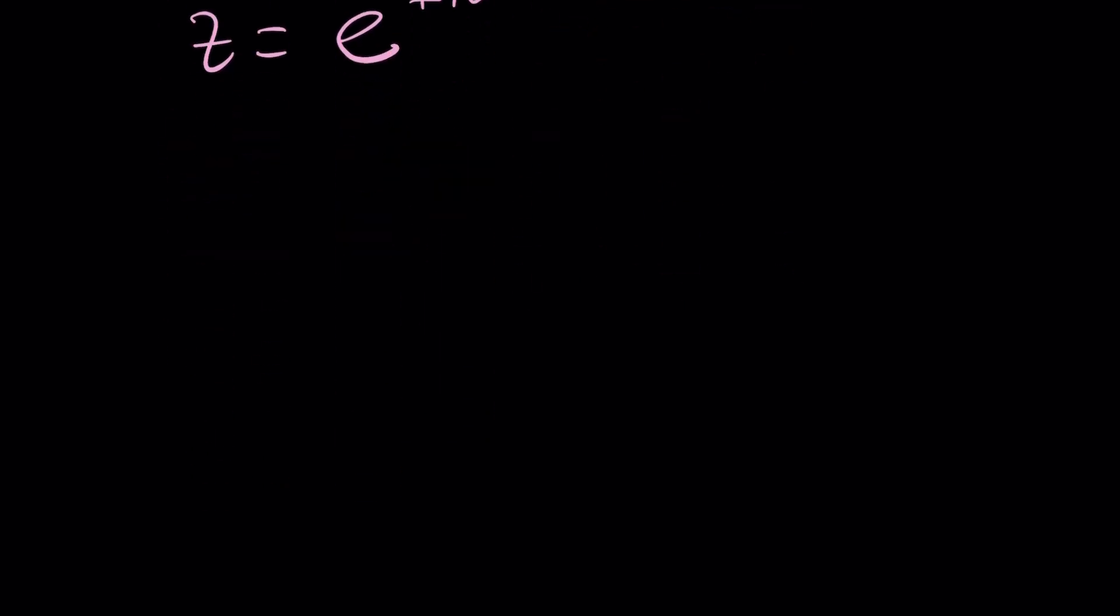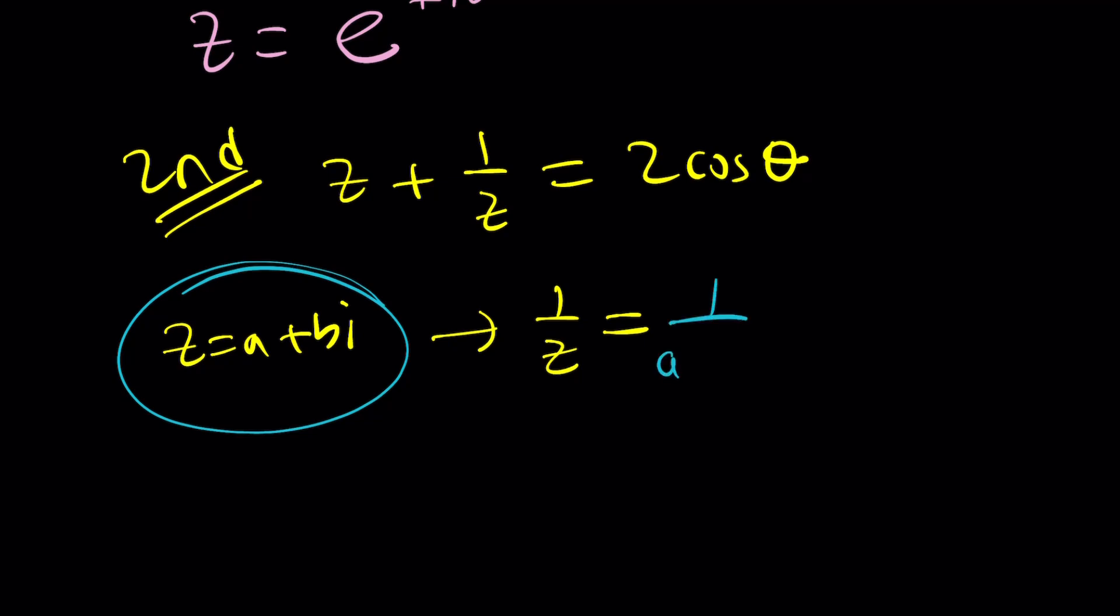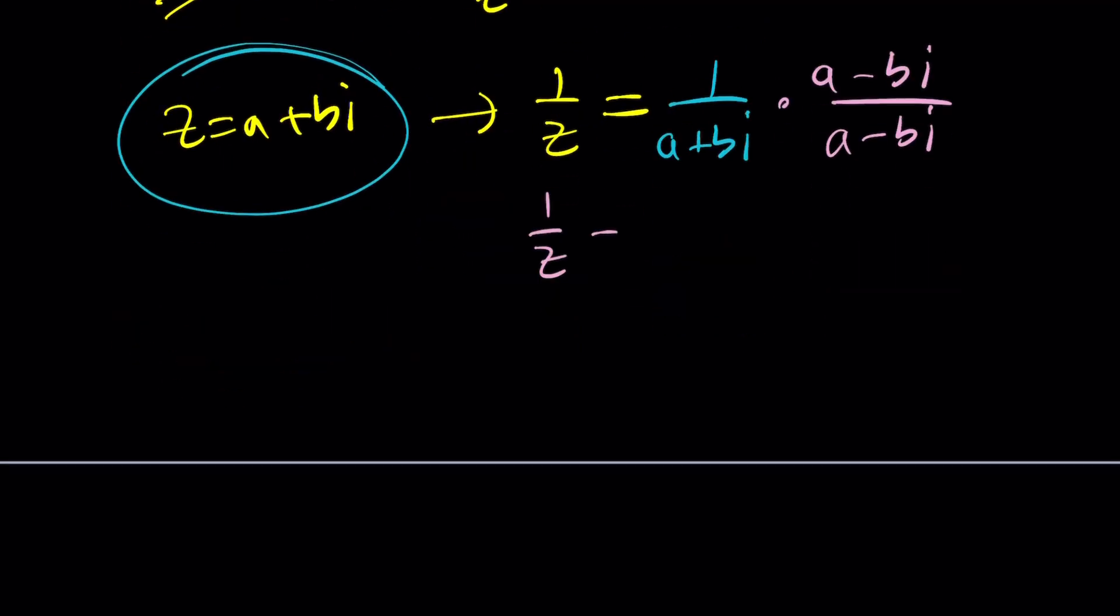Now let's take a look at the second method. It's interesting because it uses the standard form or the rectangular form. Now we're going to replace z with a plus bi. What is one over z going to be from here? I had to use this method. You know why? Because this channel is called a plus bi. It would be a disservice if I don't use this. One over z is just the reciprocal of this, but I got to use the conjugate. So let's multiply by a minus bi. That's going to give me one over z as a minus bi divided by a squared plus b squared. Remember, if you multiply two conjugates, you always get a real number. Sum of two squares. Never forget that.